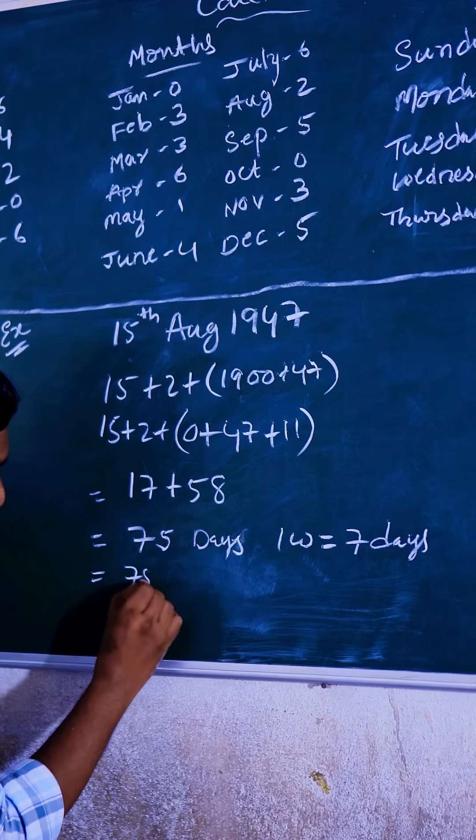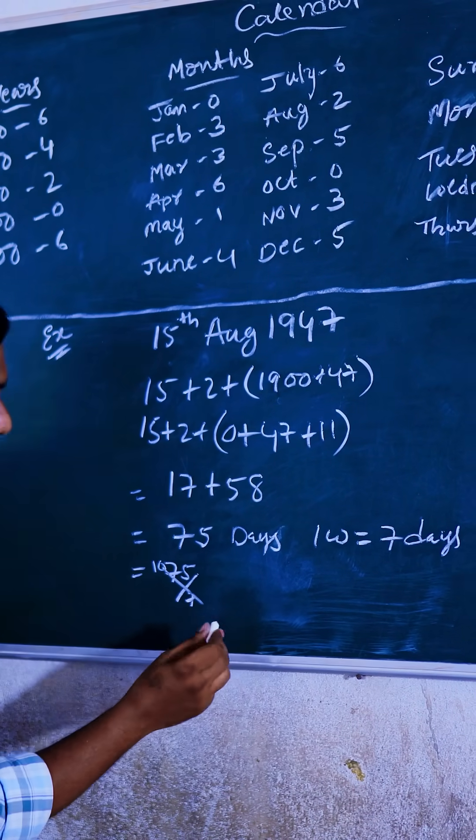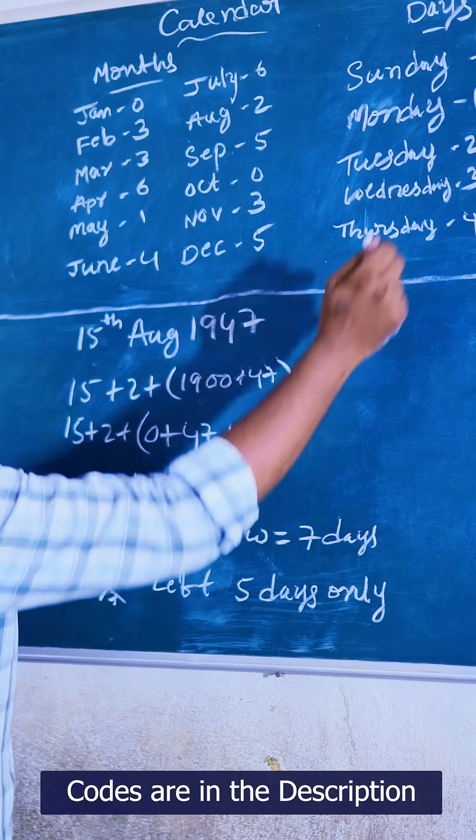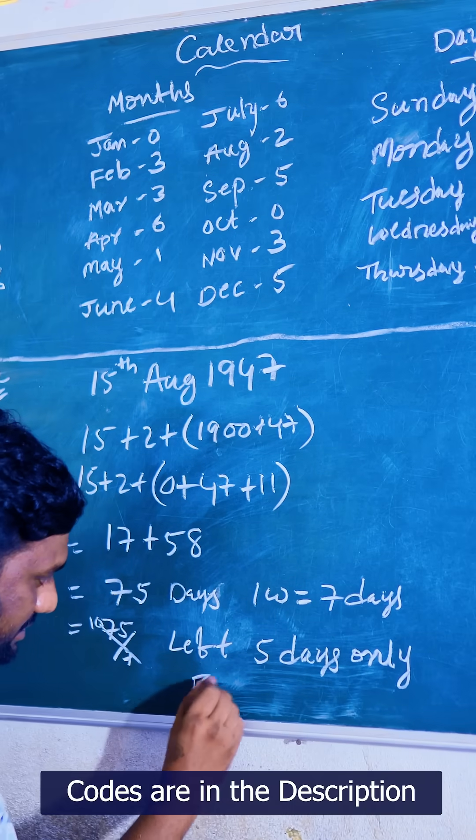So 75 divided by 7, here 10 weeks completed. Left means remainder 5 days only. So 5 means here Friday. So final answer is Friday.